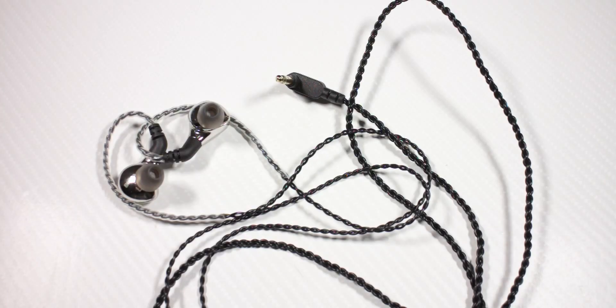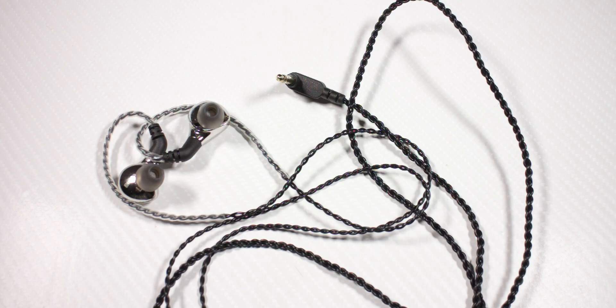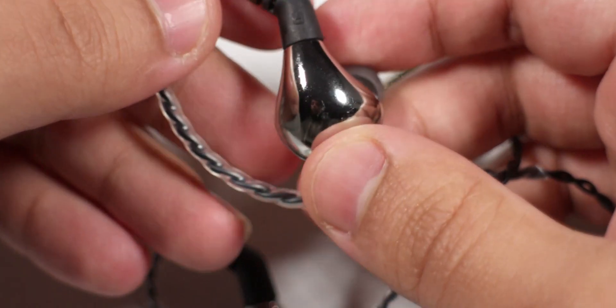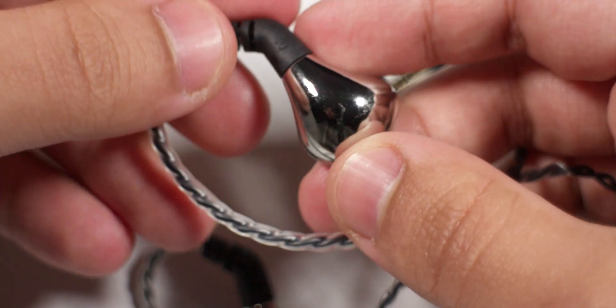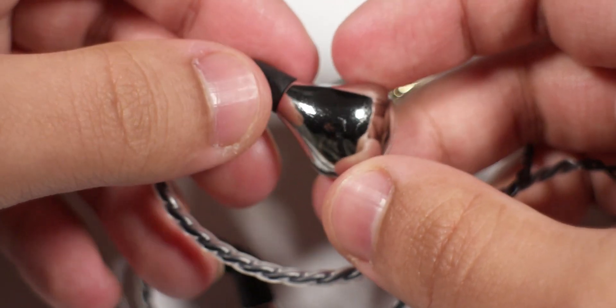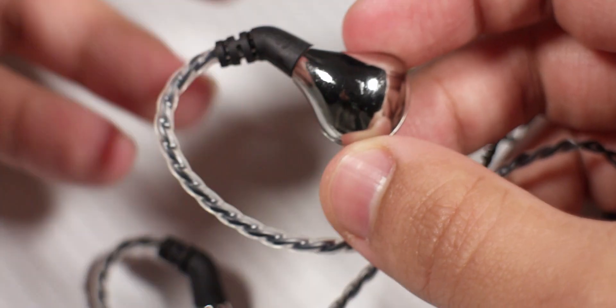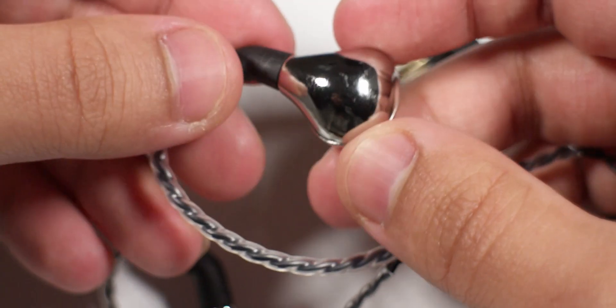How's it going guys, it's Najam. Welcome back to another video. In this video I'm going to review the BLON BL-03. These are really cheap IEMs and cost me just 17 pounds from eBay. On Amazon they cost 30 pounds, so look on eBay or AliExpress and you'll probably find them for a really cheap price.